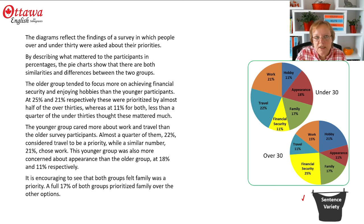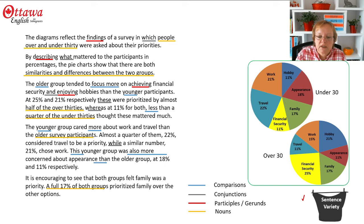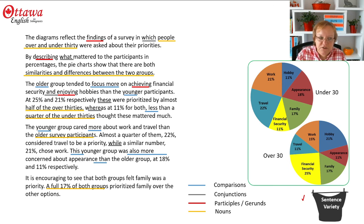In amongst all of this, we want to make our presentation sound interesting by having lots of sentence variety. You can see that we've got several comparisons, several conjunctions, and participles and gerunds sprinkled throughout. We've got lots of noun phrases that make it much more interesting than just repeating 'the under-30s said, the over-30s said' over and over. You really want to avoid doing that.